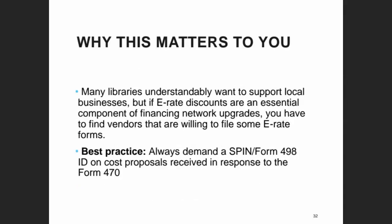Many libraries understandably have a preference for supporting local businesses, which is great. But sometimes in E-Rate, if you don't have many options, you may not be able to go with a local vendor if they're not willing to handle certain responsibilities. Best practice when requesting bids for E-Rate — either Category 1 or 2 — is to make sure one of the requirements is that the vendor have a SPIN in order to submit the bid. At the end of the day, if your library needs those discounts to make a network upgrade happen, are you going to pay the full cost to work with a local vendor when you could get thousands of dollars of discounts from a vendor that does E-Rate?